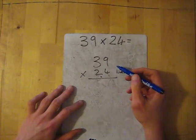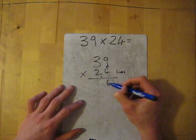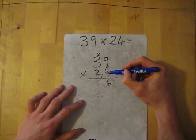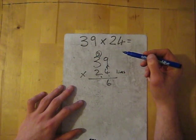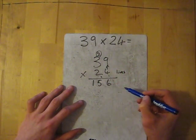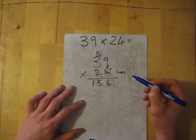So pretend that two isn't even there. So four times nine is 36. Then four times three is 12. And then don't forget to add that number. So 12 and one is 15. Now this is where we've used up life one.